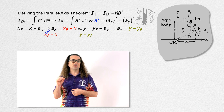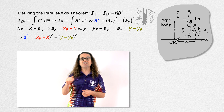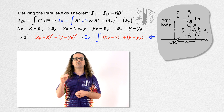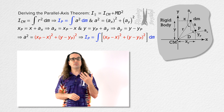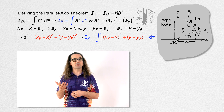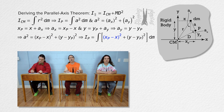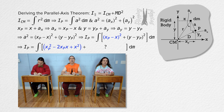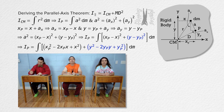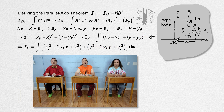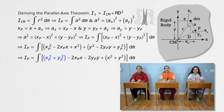Now we can substitute those values into the Pythagorean theorem, and then substitute that value back into the rotational inertia equation in place of A squared. Foiling those binomials: x sub p minus x, quantity squared, equals x sub p squared minus 2·x sub p·x plus x squared; and similarly for y minus y sub p squared. We can rearrange the terms to put like terms together: x sub p squared with y sub p squared, and x squared with y squared.